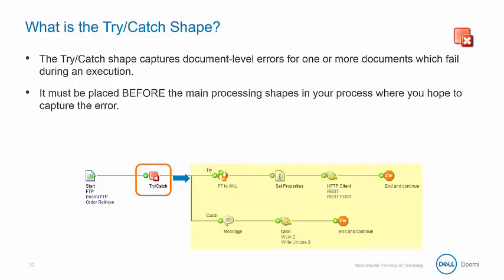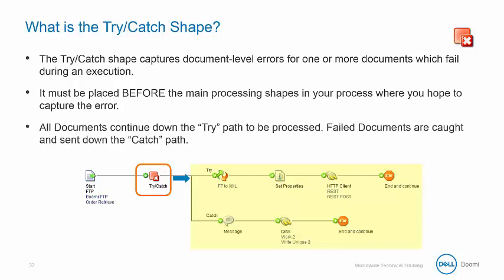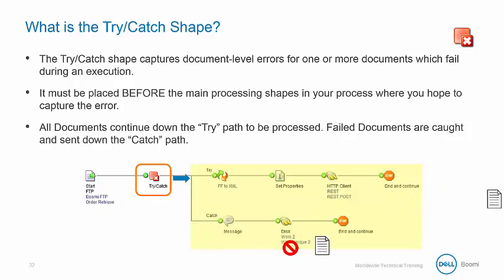If you want to capture mapping errors, place the try-catch shape before the map as depicted in this example. The try-catch shape sends documents down the try path to be processed. Failed documents are caught and are sent down the catch path.